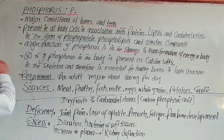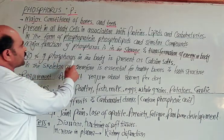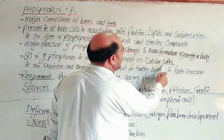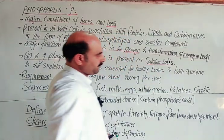About 80% of phosphorus in the body is present as calcium phosphate.